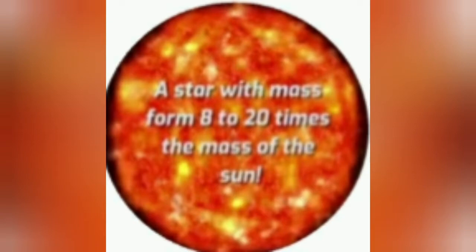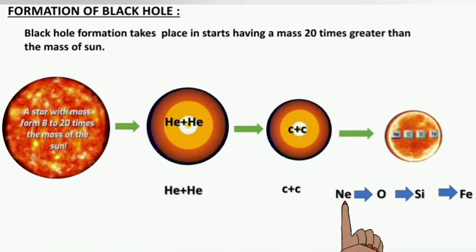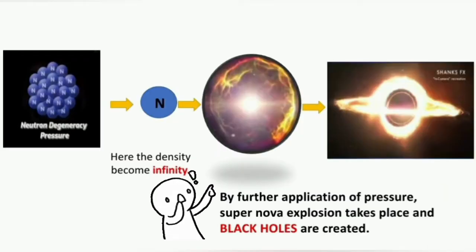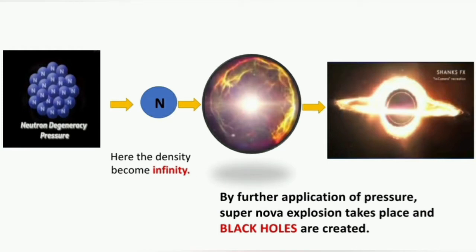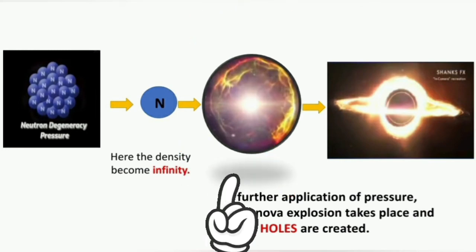The density is very small. Now, when the sun is 20 times the size of a star, the core produces helium molecules, then carbon, then neon, then oxygen, then silicon, then iron. The pressure becomes more than neutral.